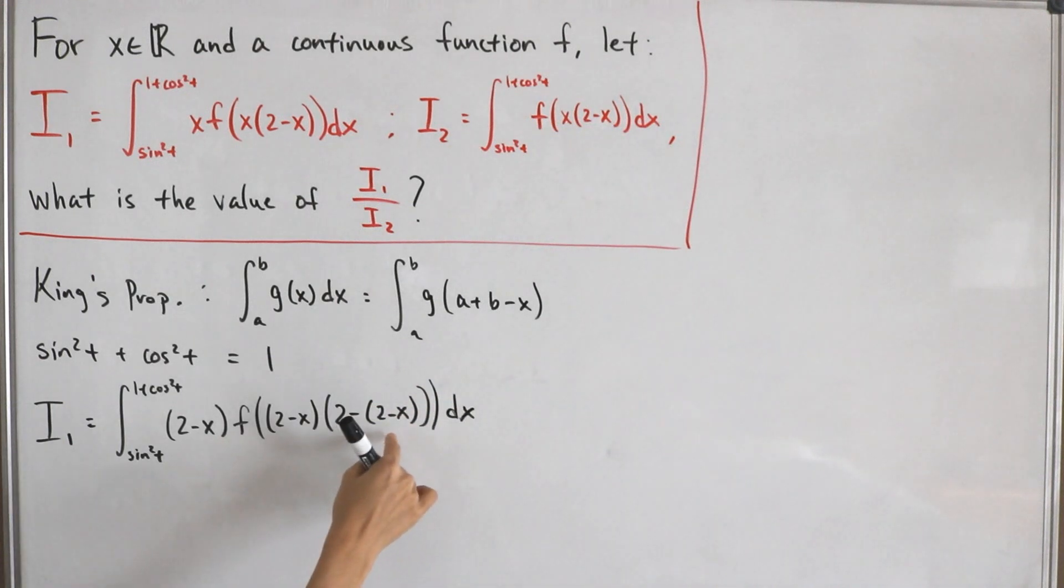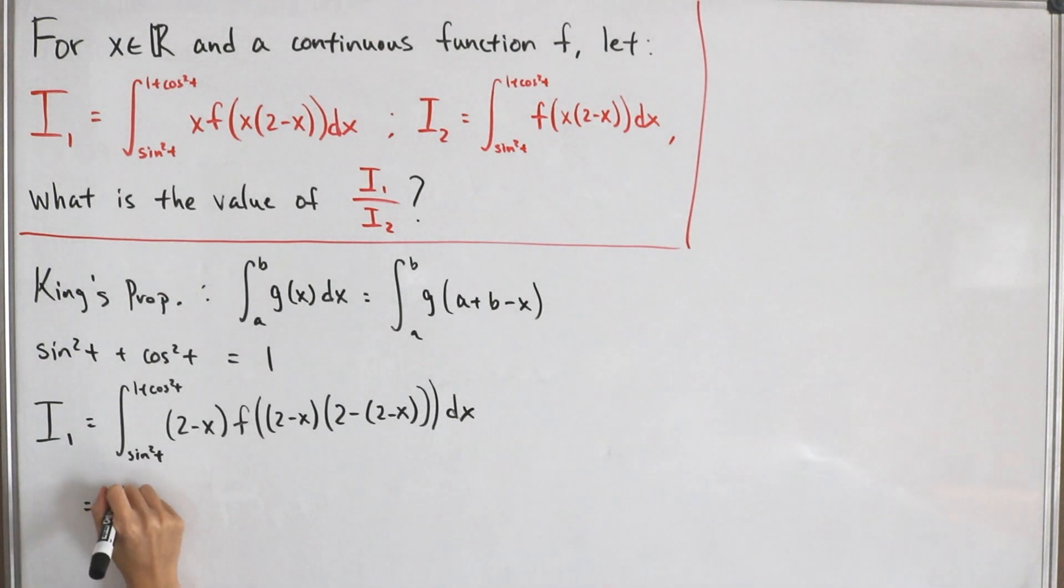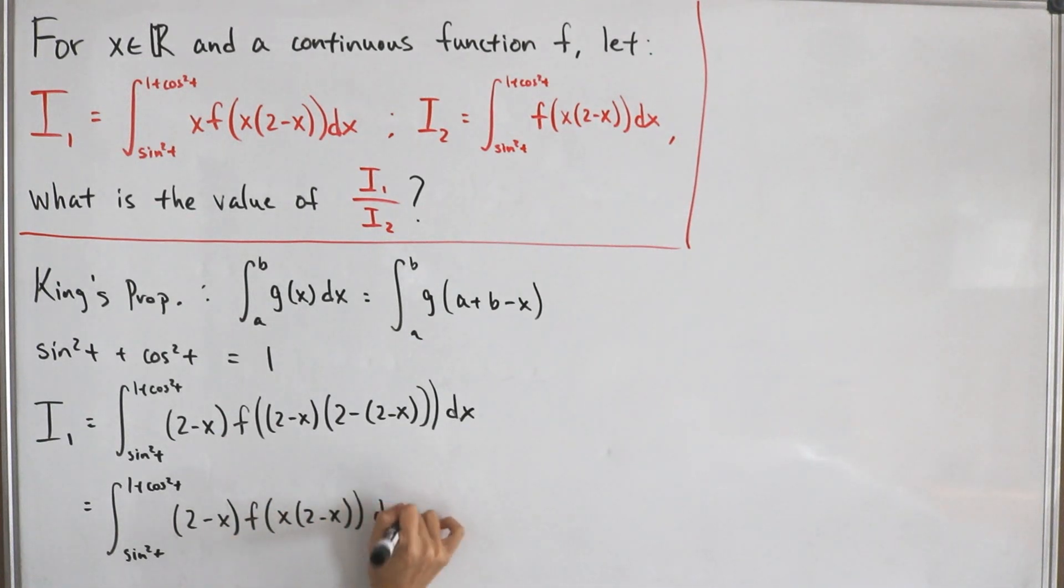As you see, I did the substitution two minus x and then plugged that in for the new input of x. So now we have one plus cosine squared t on the top, then still sine squared t on the bottom. Cleaning up everything, it's going to be two minus x and then multiply with f of x times two minus x, then dx.